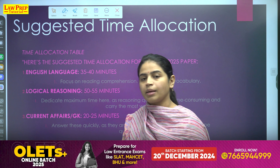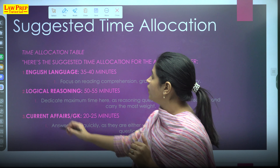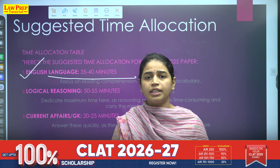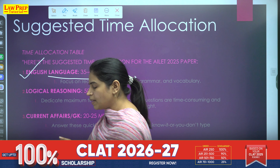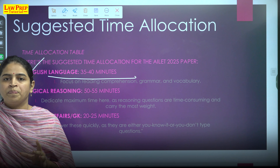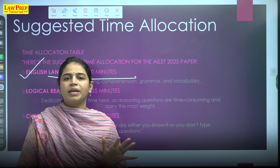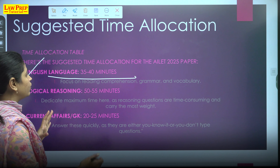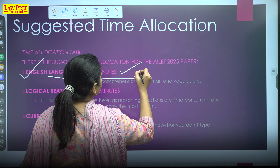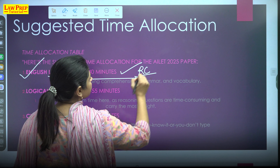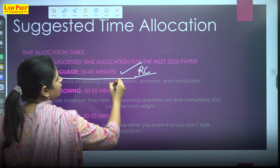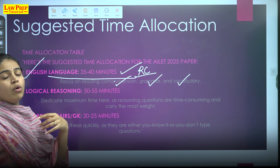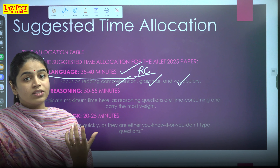First, there's an allocated timetable. You have to focus first on your English language, giving 35 to 40 minutes. This is passage-based and they keep their passages of a certain length, so you have to give ample time for your RC. Give enough time to reading comprehension, focus on grammar, vocab — especially pay attention to vocab and understand the tricks.